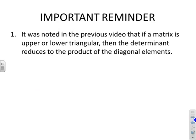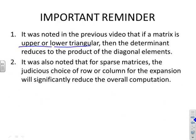An important reminder: if a matrix is upper or lower triangular, the determinant reduces to the product of the diagonal elements. It was also noted that if you have a sparse matrix — one with lots of zeros — a judicious choice of row or column for the expansion may significantly reduce the overall computation.